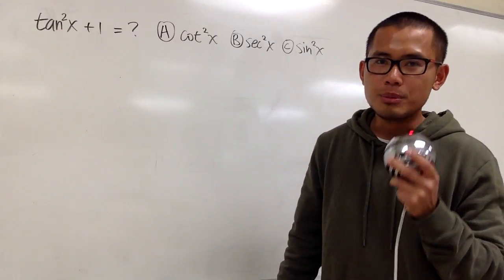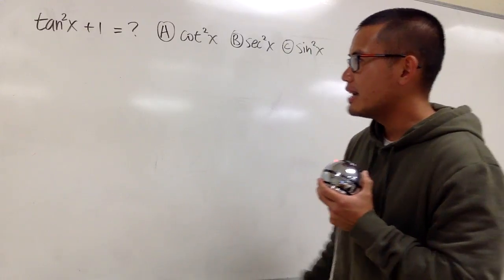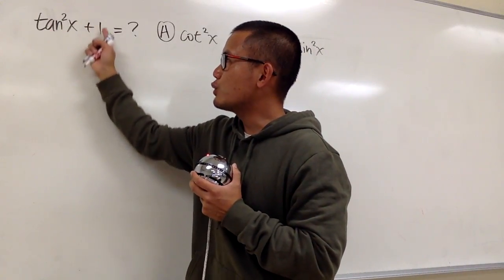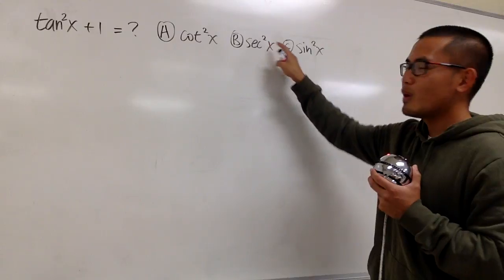The first way is that you will have to remember a lot of identities. In that case, you can just go ahead and say tan²x + 1 is the same as sec²x.